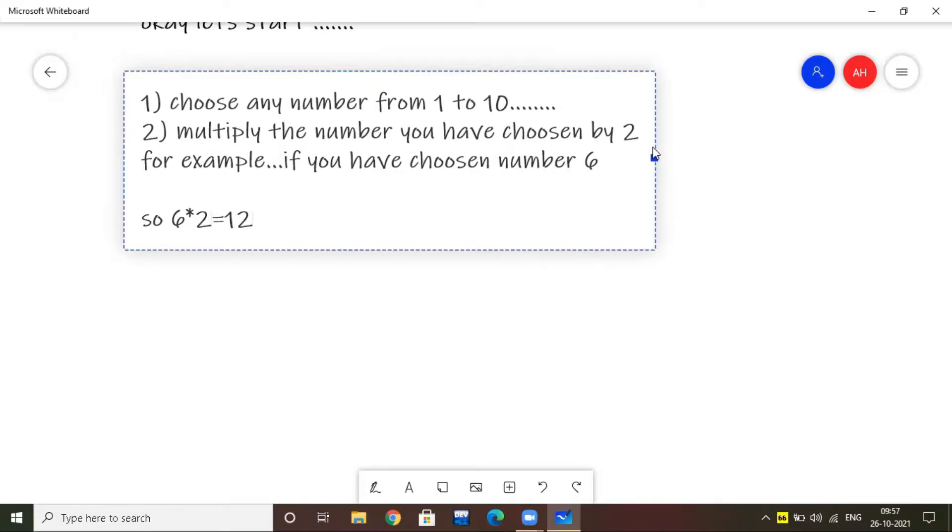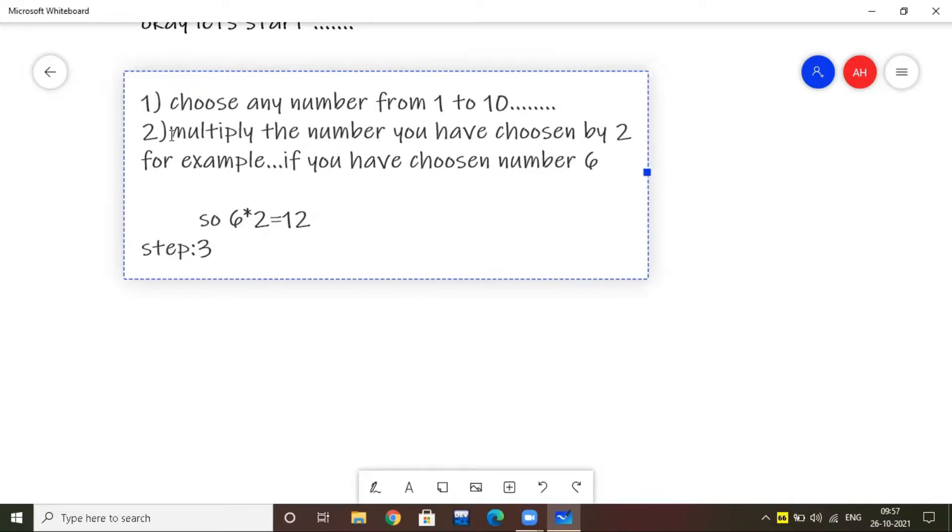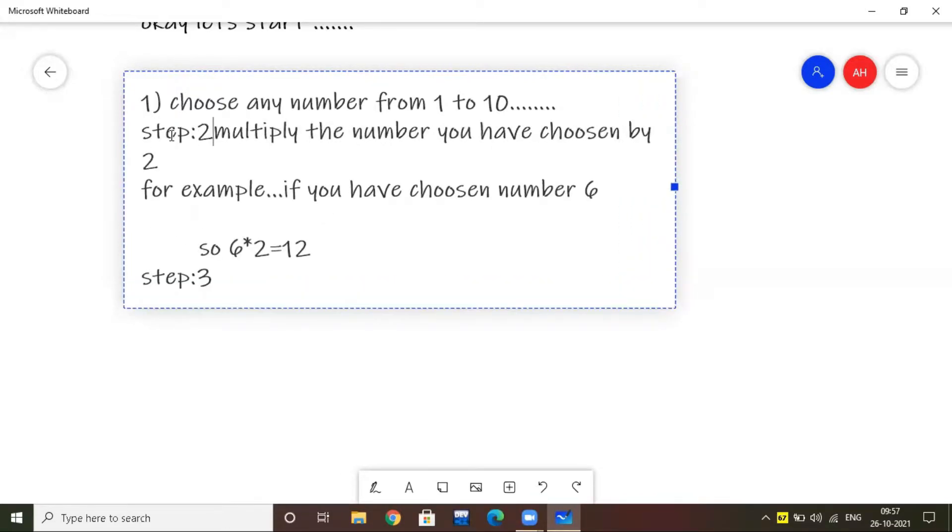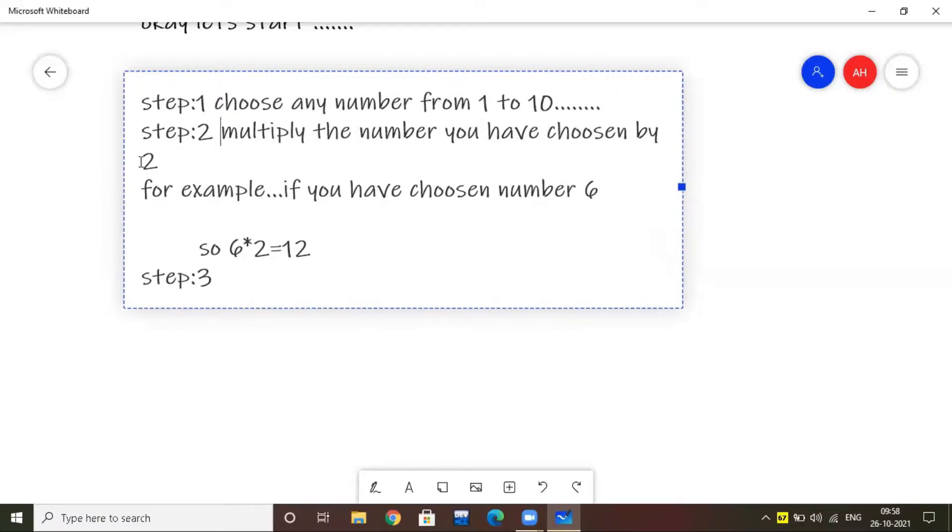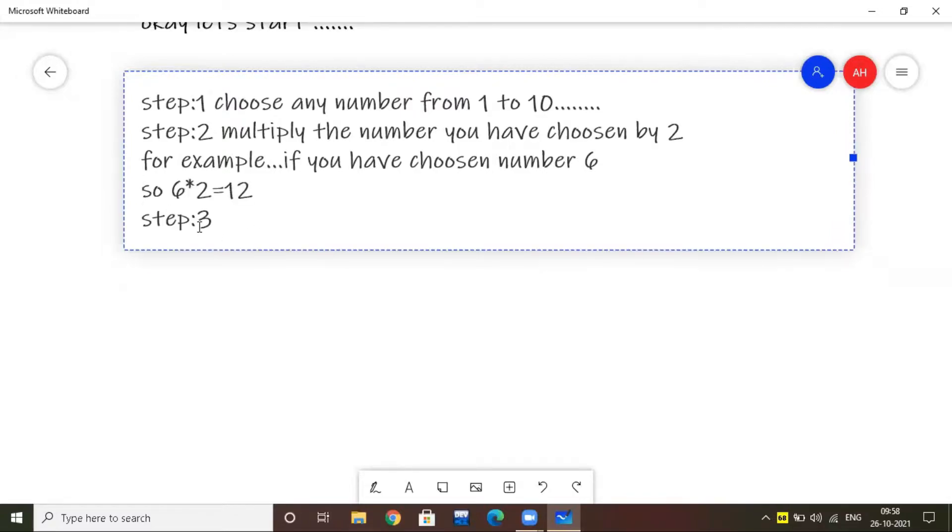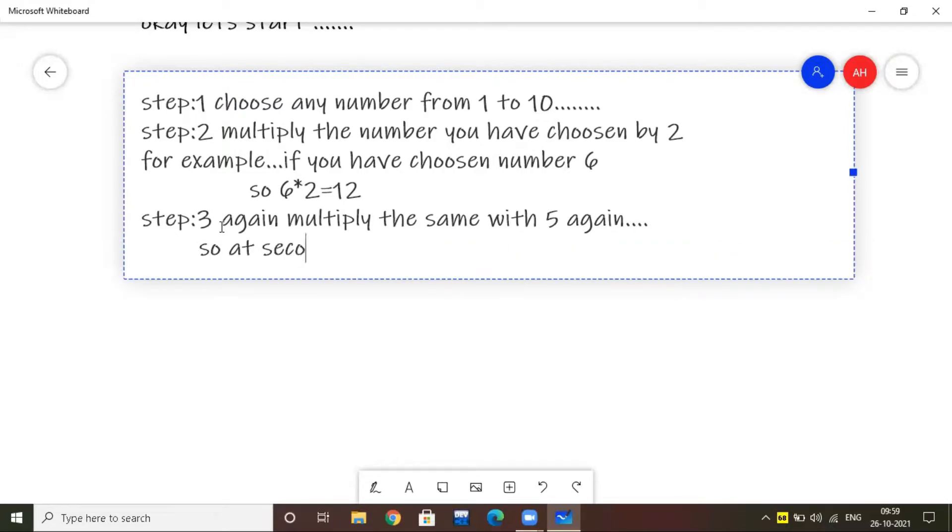Okay, this is step 2. Now step 3. We got an answer, right? Like 12. Now multiply the step 2 answer with 5. 12 into 5 is 60.